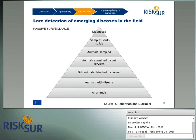This can be summarised in a pyramid diagram. At the bottom are all animals; fewer have the disease; fewer still are detected sick by farmers; those examined by vet services are fewer again; then animals that get sampled; and finally those that get diagnosed at the top — generally very few compared to the number of animals really affected. What we want with early detection is to detect as many cases as possible at the lowest part of this pyramid.